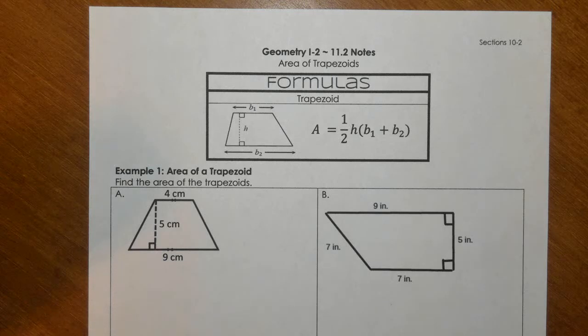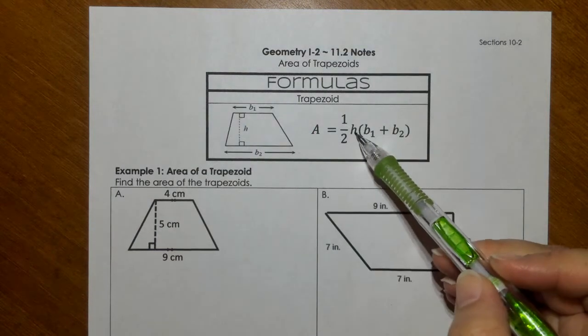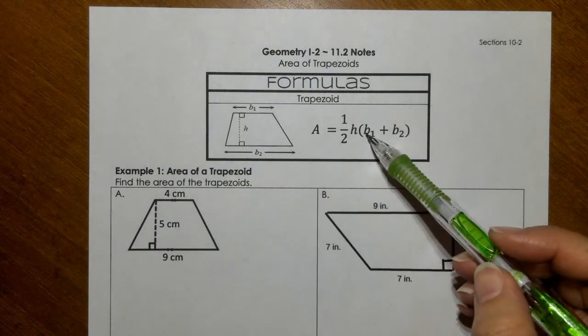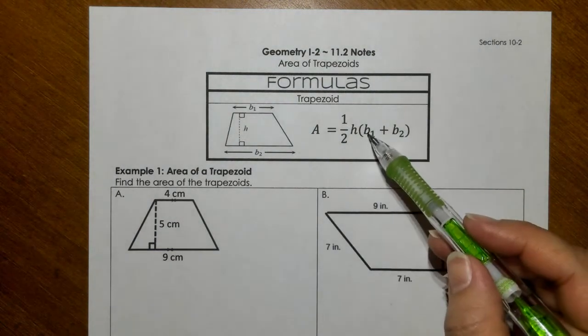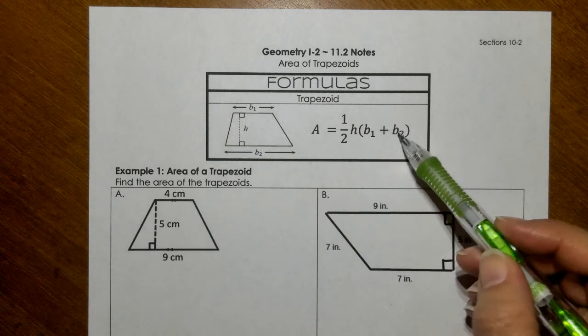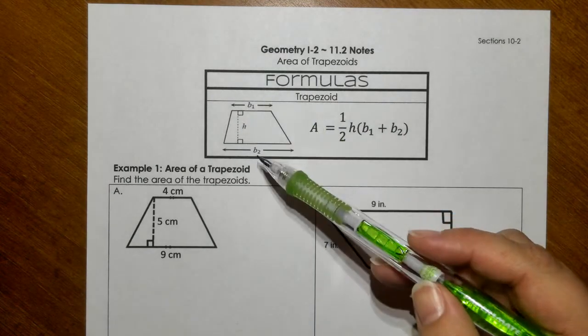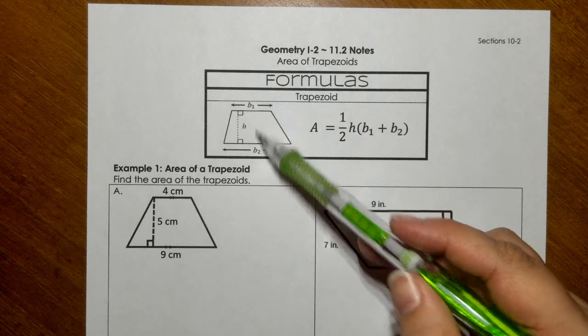For section 11.2, finding the area of a trapezoid, I give you the formula: one-half times the height of the trapezoid times the quantity of base 1 plus base 2. Base 1 and base 2 are always going to be parallel to each other. They're never going to touch each other.